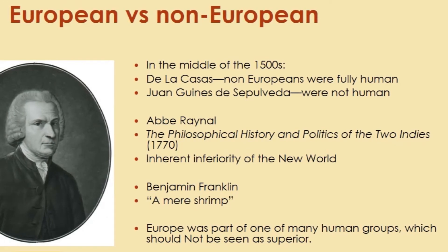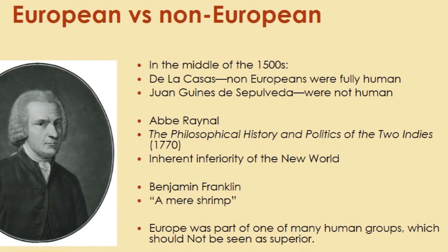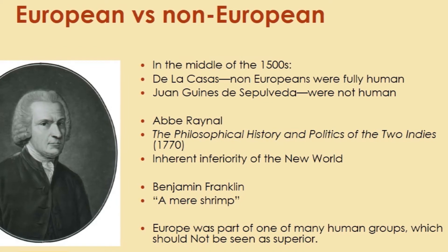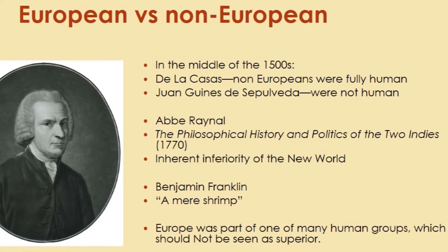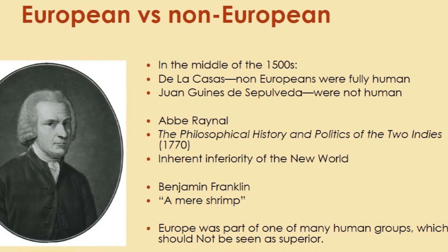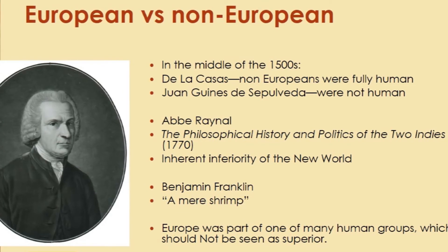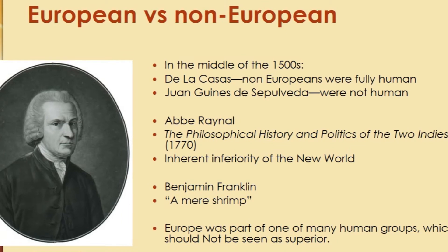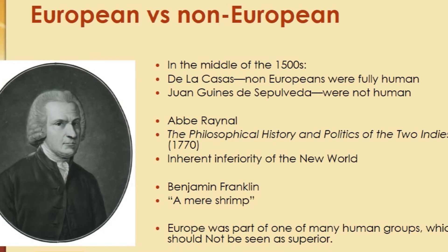The discussion of differences between Europeans and non-Europeans goes back to the 1500s, when Europeans discovered the Americas. Las Casas said that non-Europeans were fully human and therefore couldn't be used as slaves, while Sepúlveda believed they were subhuman. The Pope ultimately ruled that the people of the Americas were fully human and could not be enslaved — which led Europeans to go to Africa and enslave people there instead.